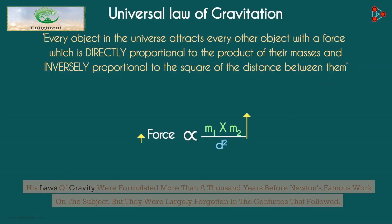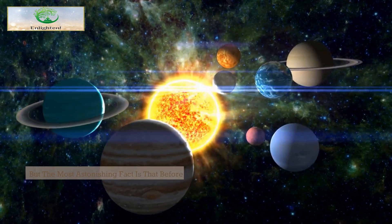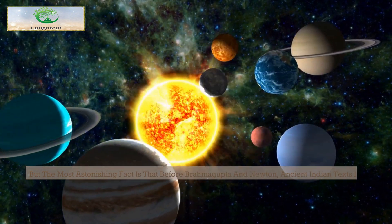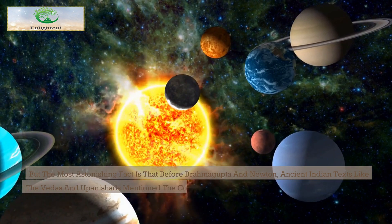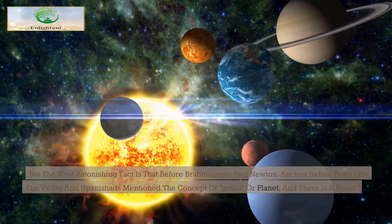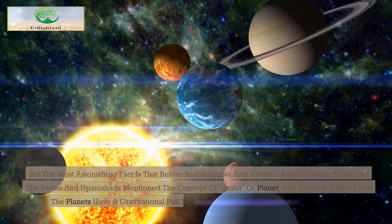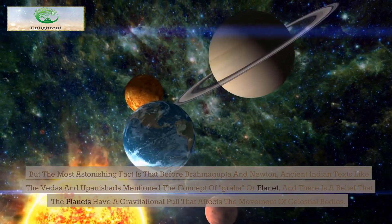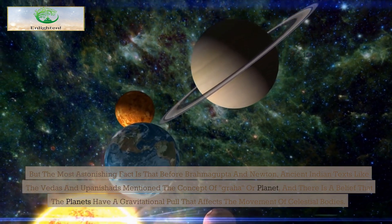But the most astonishing fact is that before Brahmagupta and Newton, ancient Indian texts like the Vedas and Upanishads mentioned the concept of graha or planet, and there is a belief that the planets have a gravitational pull that affects the movement of celestial bodies.